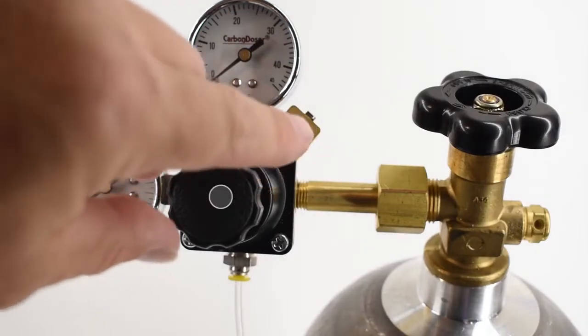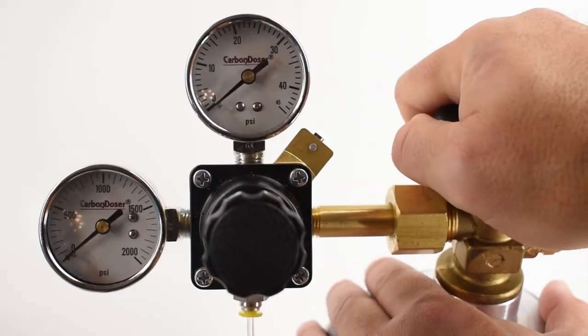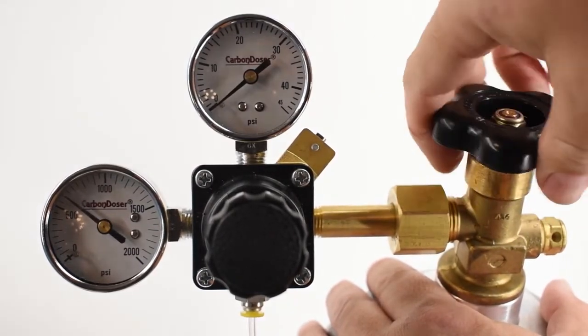Before turning the CO2 cylinder on, set the output pressure to zero by turning the adjustment knob counter-clockwise. Slowly open the valve on your CO2 cylinder.